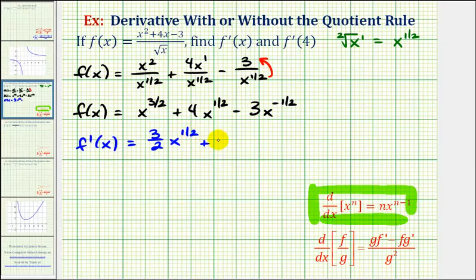plus four. Then we'd have times one-half, x to the power of one-half minus one is negative one-half, minus three times negative one-half, x to the power of negative one-half minus one is negative three-halves.